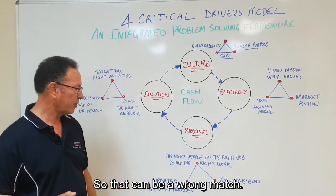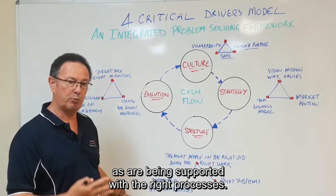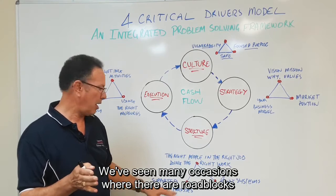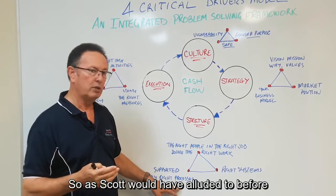The other thing is you've got to have the right systems in place. Systems are the enabler for the organization to get the output that they require as are being supported with the right processes. We've seen many occasions where there are roadblocks within the systems or processes that prevent people from being efficient. And you've probably experienced that in your own business at times.